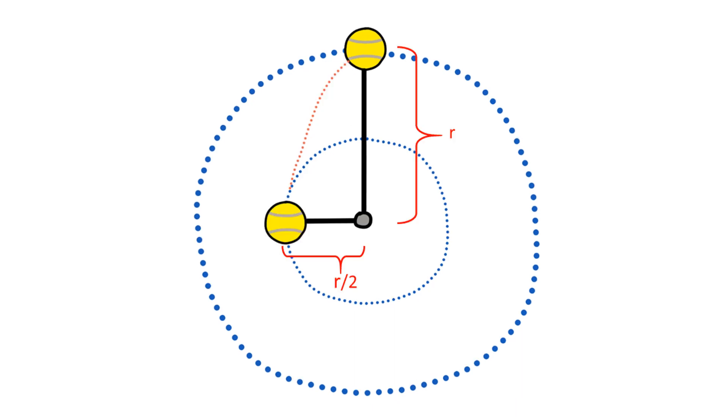Using conservation of energy, we find that halving the radius will double the ball's linear speed. Combining this increase in linear speed with the decreased radius results in a four times increase in the angular velocity, just as angular momentum predicts.